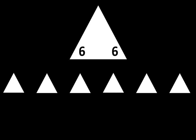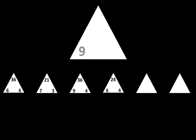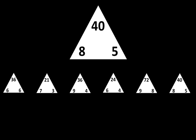Let's move to the next row. The next one is 6 times 6 is equal to 36. The next one is 7 times 3 is equal to 21. 9 times 4 is equal to 6. The next one is 6 times 4 is equal to 24. The next one is 9 times 8 is equal to 72. The next one is 8 times 5 is equal to 40.